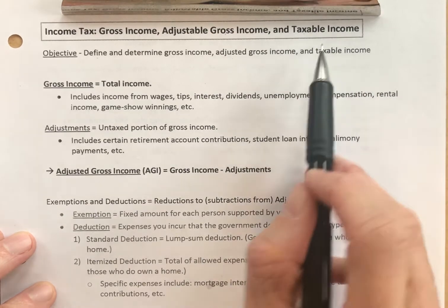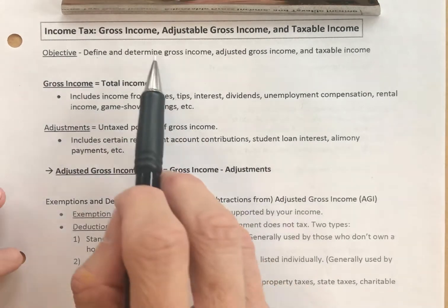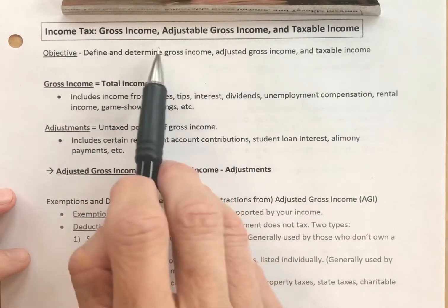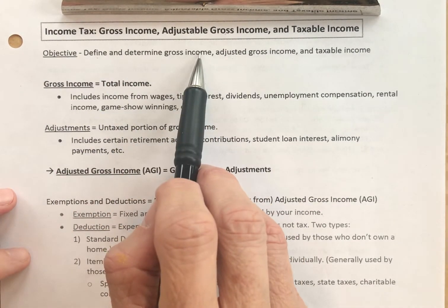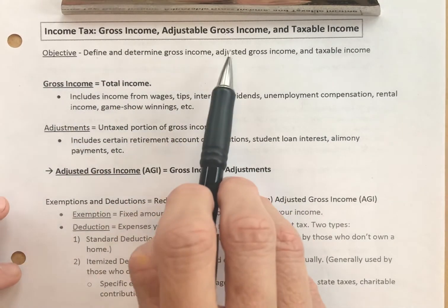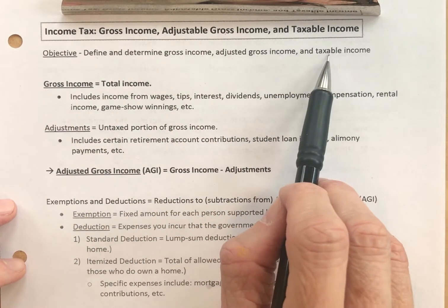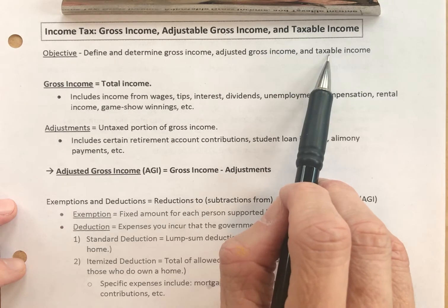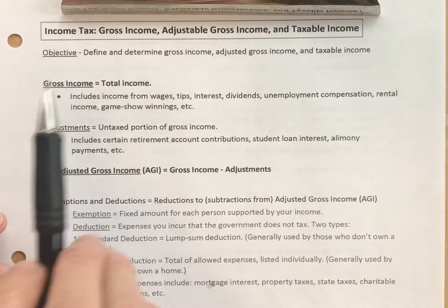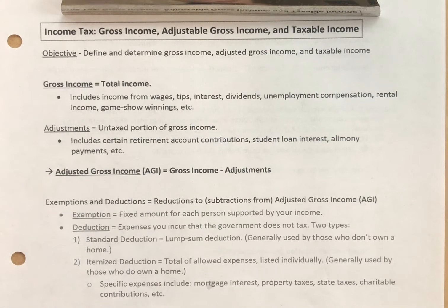The taxable income is the income that the government taxes. They don't tax all of your income because you can adjust it — you can subtract many things. What they're looking for is the amount of your income that is taxable, and that's what they'll be taxing, which we'll deal with in the next video.